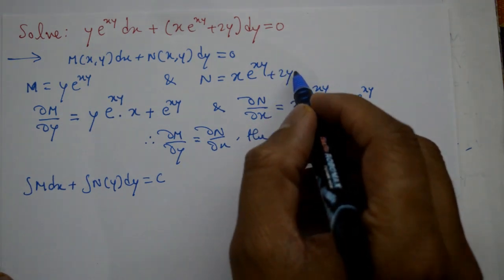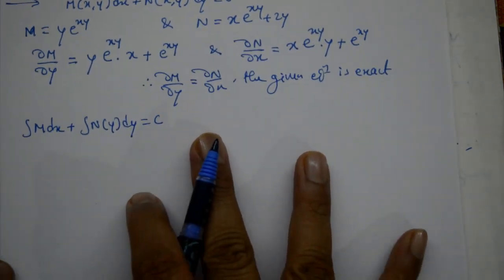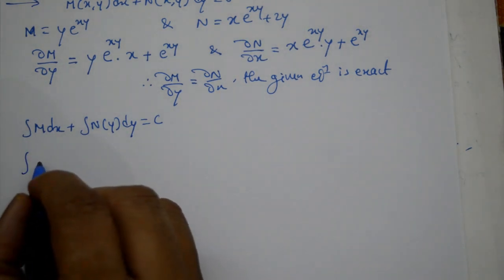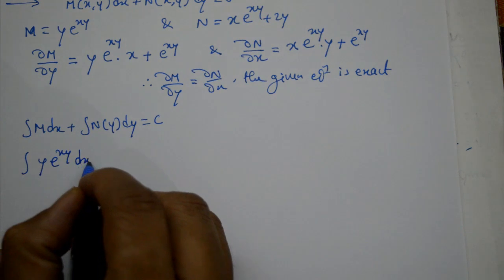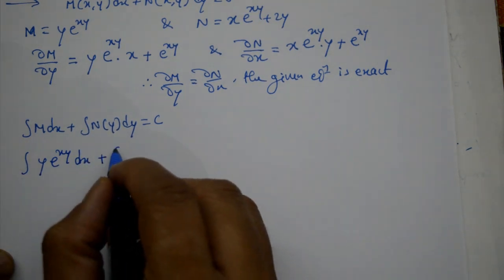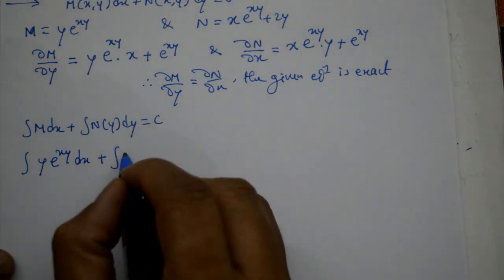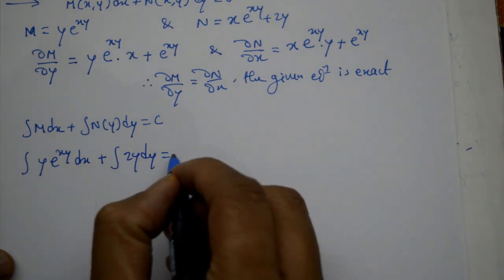2y, the other has x variable, we'll consider this one, not that one. Now, integration of m is y into e raise to xy with respect to x, plus integration of n of y, here 2y dy is equal to c.